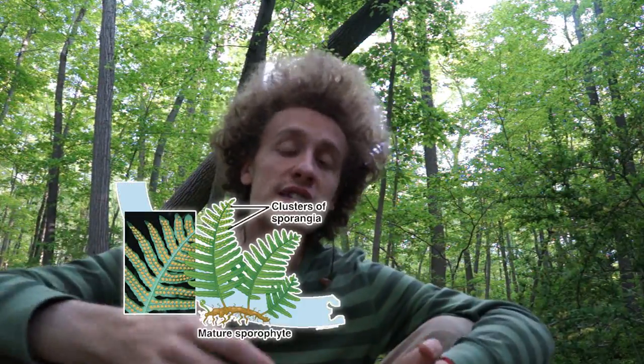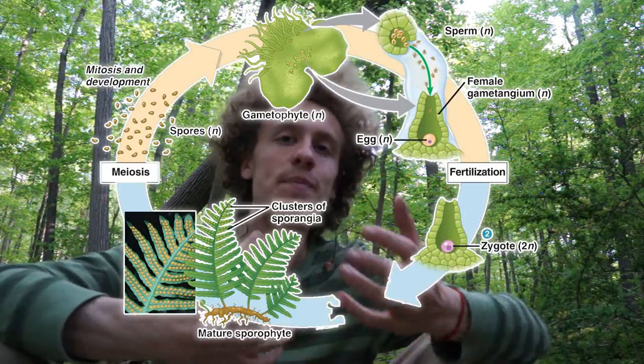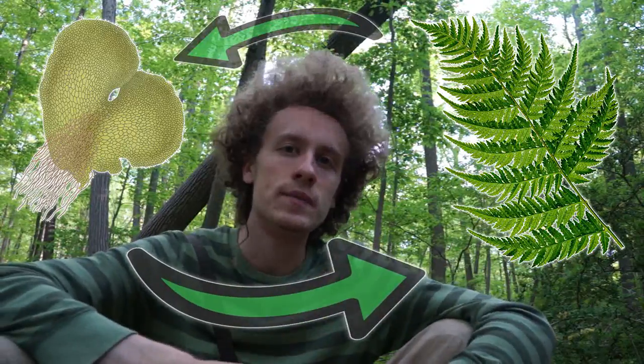So this is what alternation of generations means. It means you've got two distinct body types that alternate from one another. Sporophytes make gametophytes, gametophytes make sporophytes. They're all the same creature — you would call them all ferns, they're the same species. They just have radically different body plans. Some bodies are diploid, some bodies are haploid, and they give rise to one another.